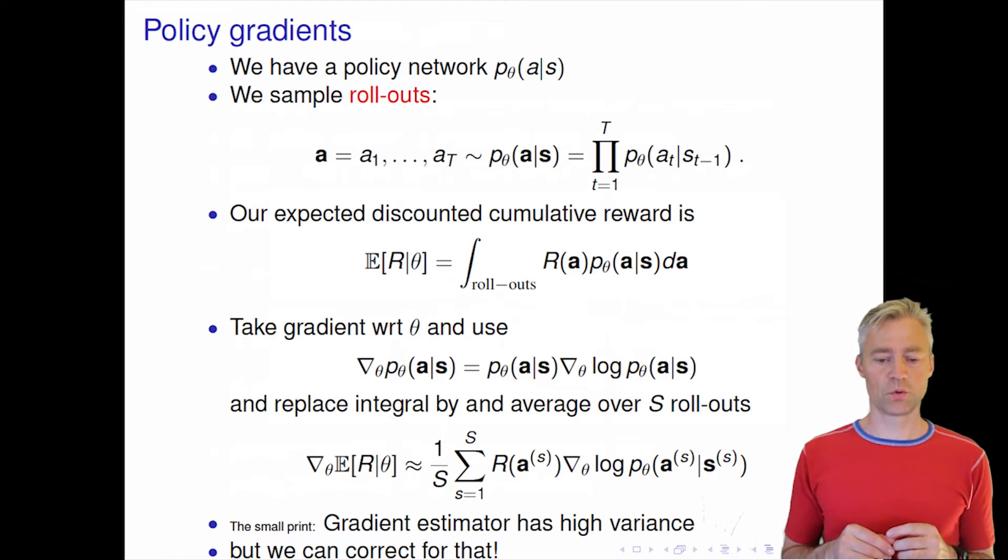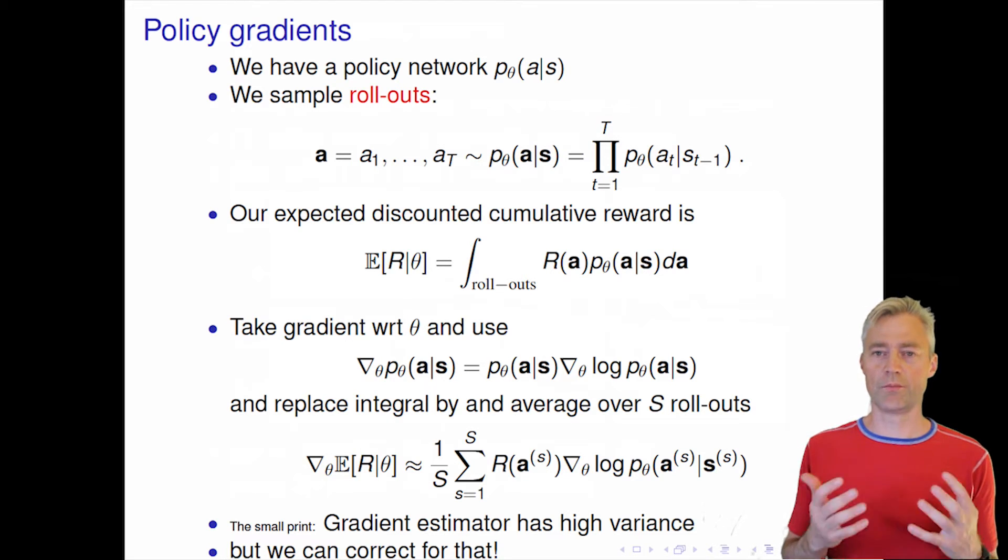So if we take this expression, of course what we want to do is that we want to maximize our expected cumulative reward. So we can do that by a gradient method because now we assume that we have, for example, parameters in a neural network so they are differentiable.